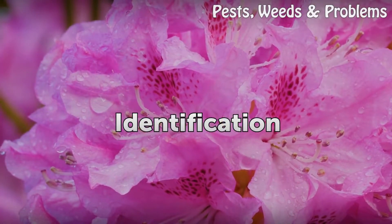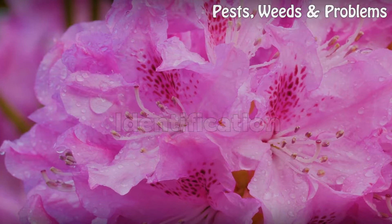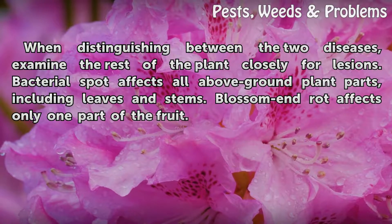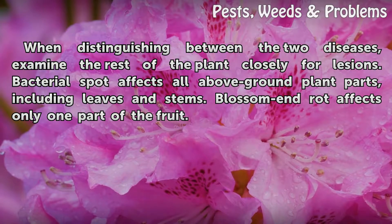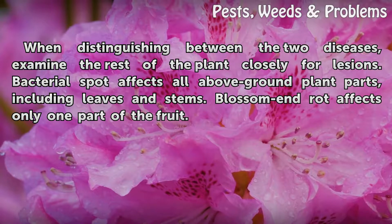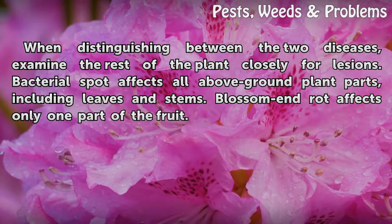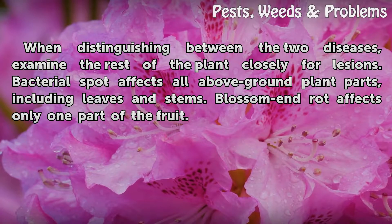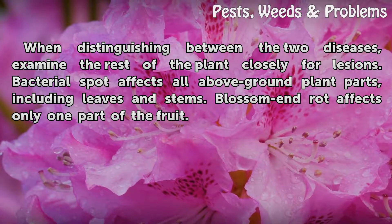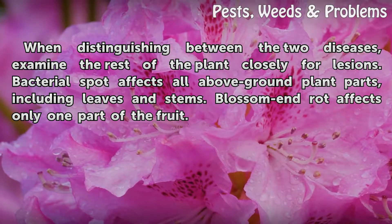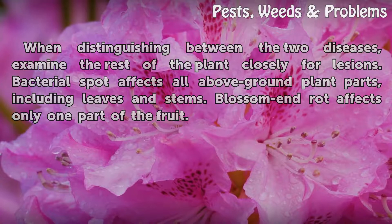When distinguishing between the two diseases, examine the rest of the plant closely for lesions. Bacterial spot affects all above-ground plant parts, including leaves and stems. Blossom end rot affects only one part of the fruit.